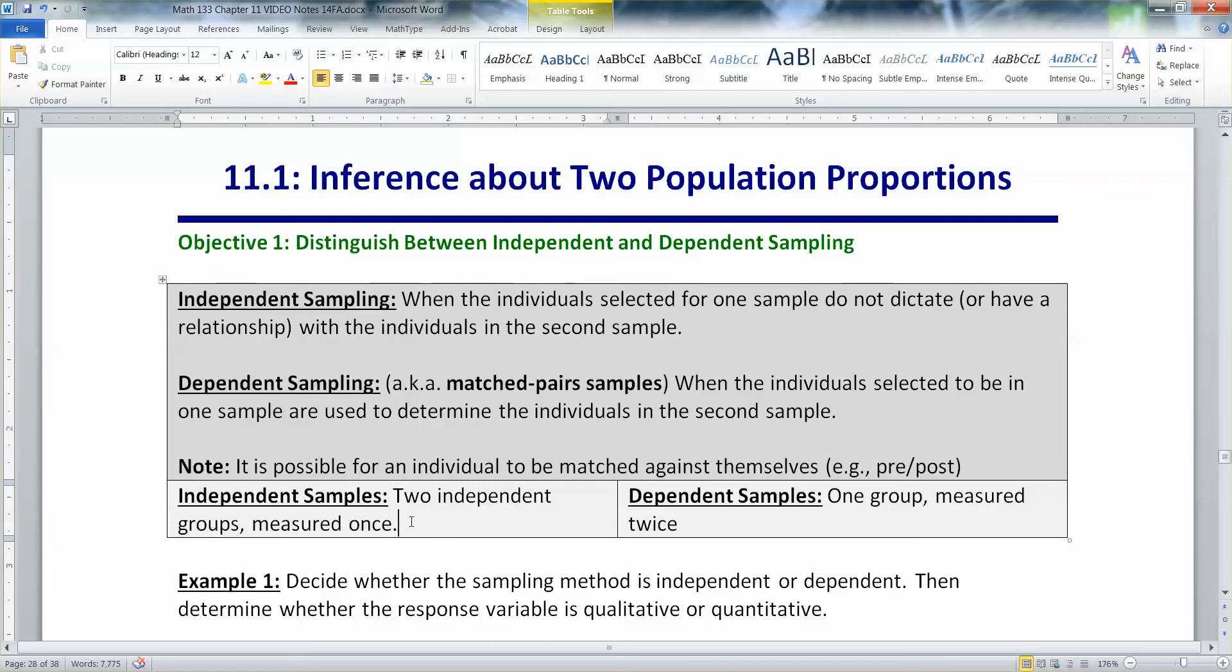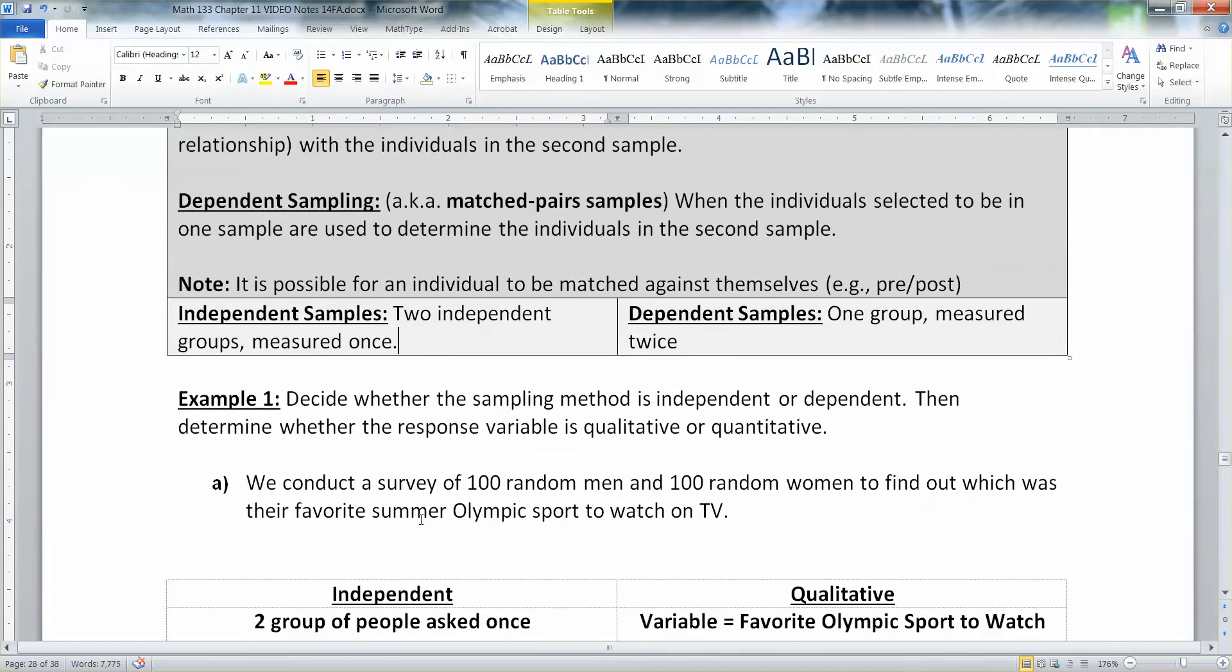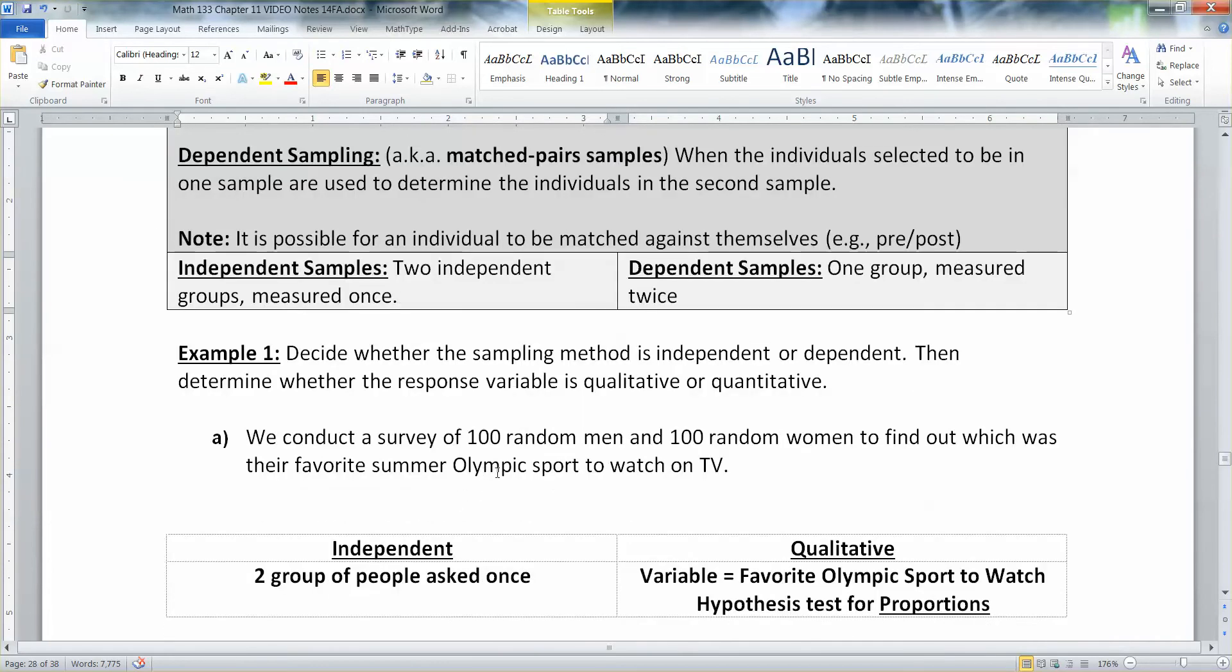Whereas an independent sample is when it's two groups that are measured once. So we're going to determine whether the following sampling methods are independent or dependent, then determine whether the response variable is qualitative or quantitative. We conduct a survey of 100 random men and 100 random women to find out which was their favorite summer Olympic sport to watch on TV.